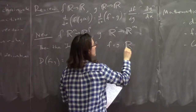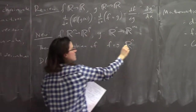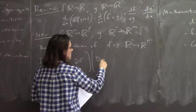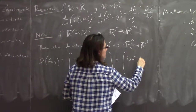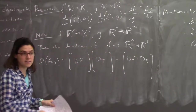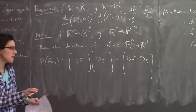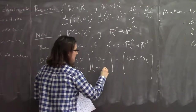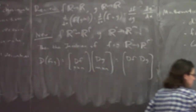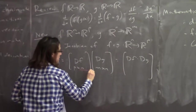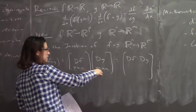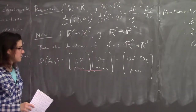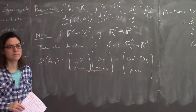You might be worried from linear algebra that the matrix dimensions won't work out. But df is a p×m matrix and dg is an m×n matrix. The two inner dimensions match up, so we can multiply them and get a p×n matrix. That's how we'll do it. It's a bit abstract, so let's do an example.